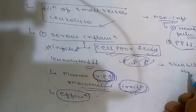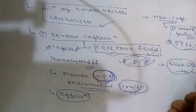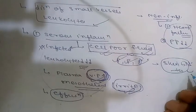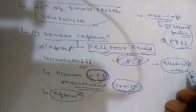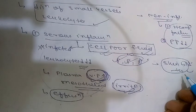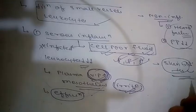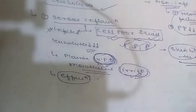A classic example of serous inflammation is a skin blister. A skin blister resulting from a burn or viral infection represents accumulation of serous fluid within or immediately beneath the damaged epidermis of the skin.